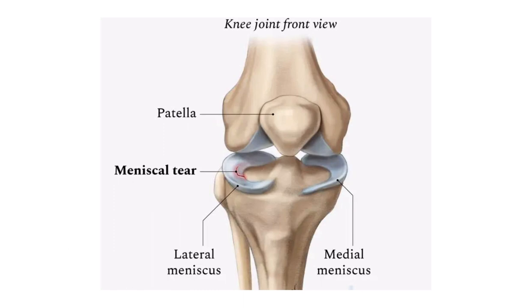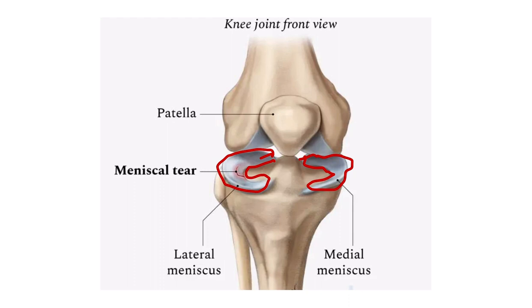So first of all, let's see the two important menisci. One is the medial menisci and another one is the lateral menisci. This one is the medial menisci of the knee joint and this one is the lateral menisci of the knee joint. Among these, the medial menisci is most commonly injured and the lateral menisci is less commonly injured.